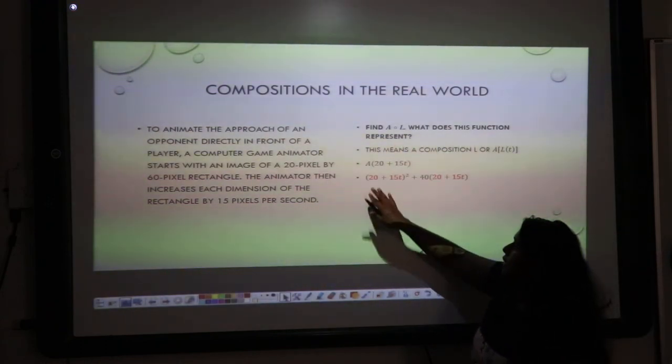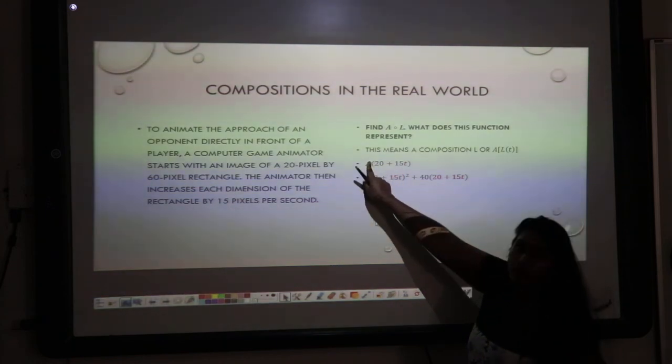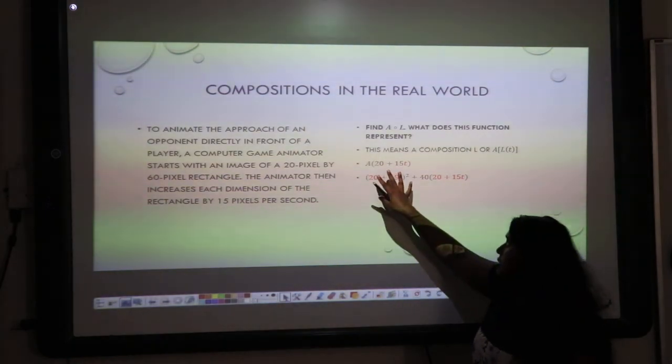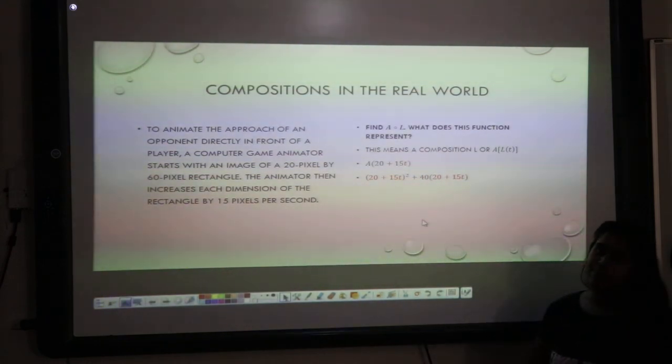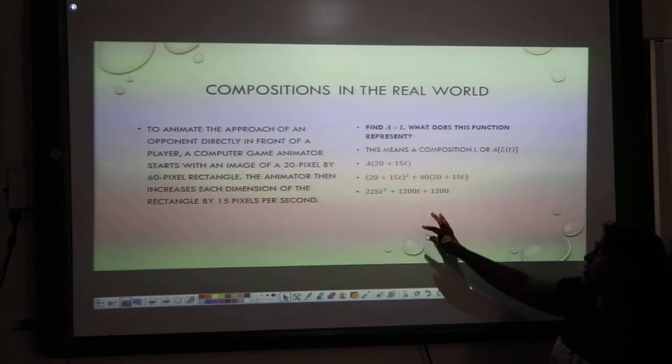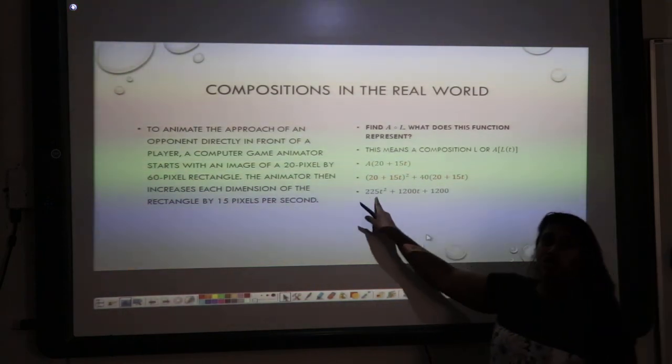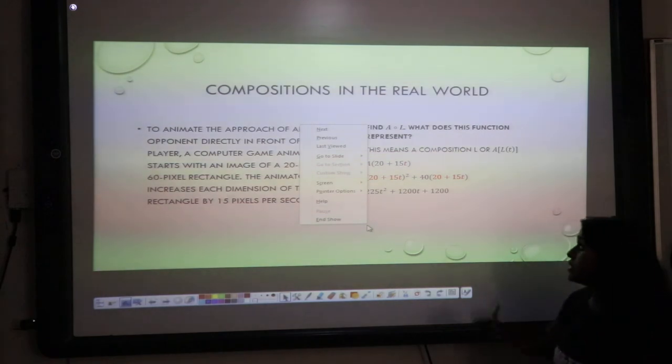That area was L squared plus 40L. So, that becomes 20 plus 15T squared plus 40 times 20 plus 15T. I simplify it down. And, this gives me an area formula in terms of T. So, that's what the composition did.